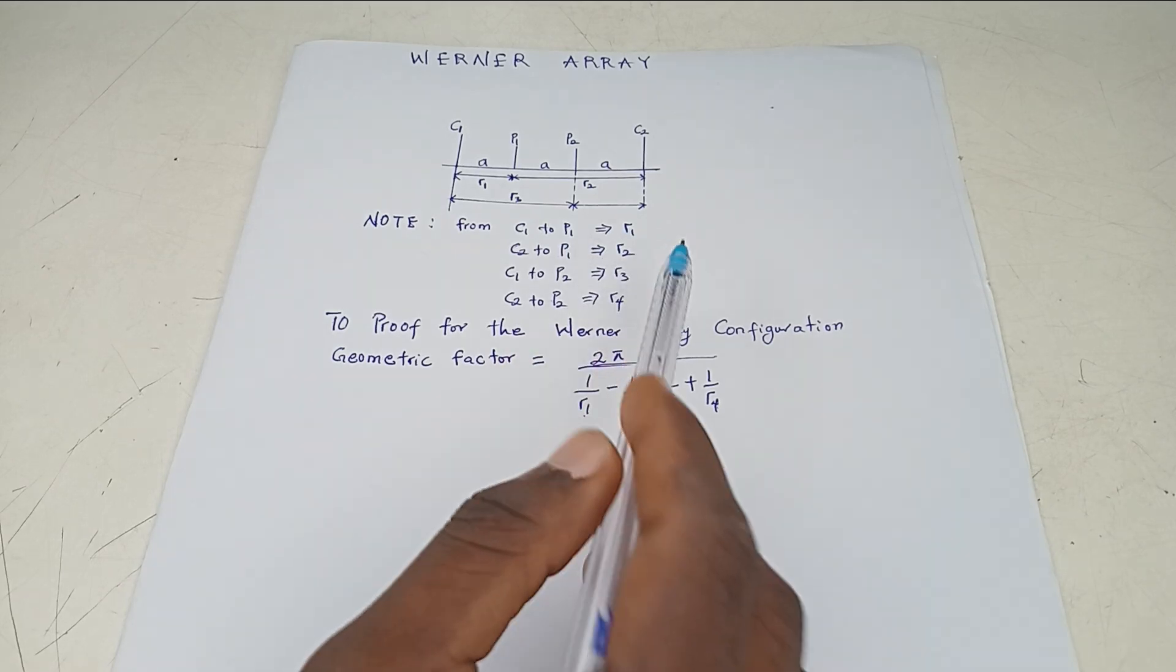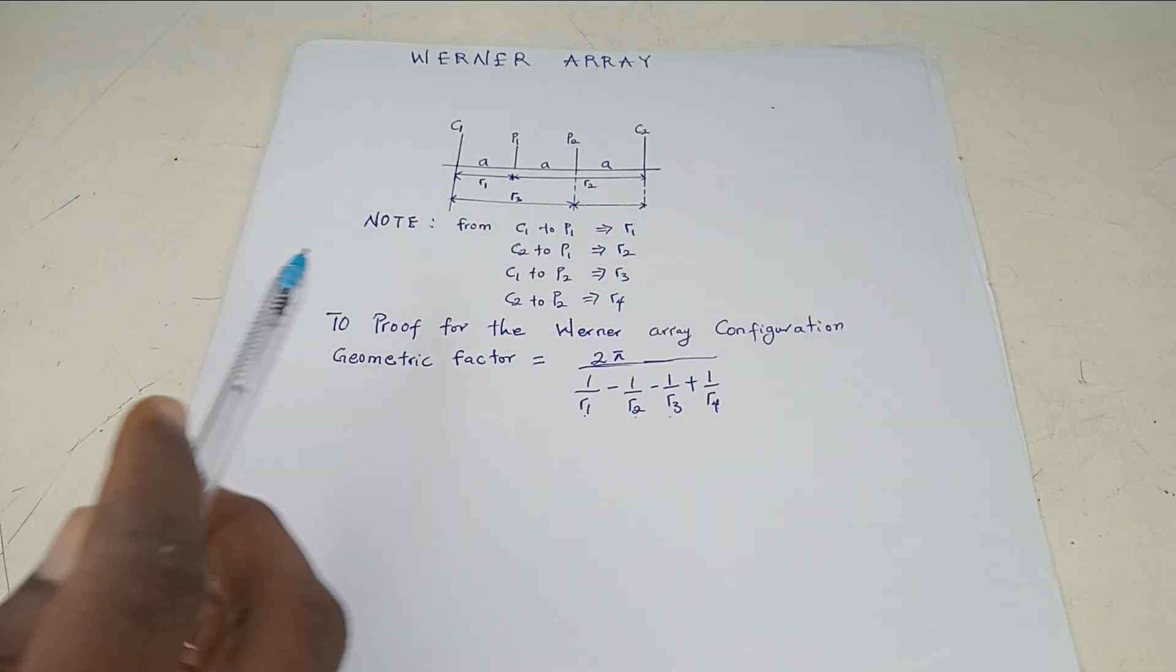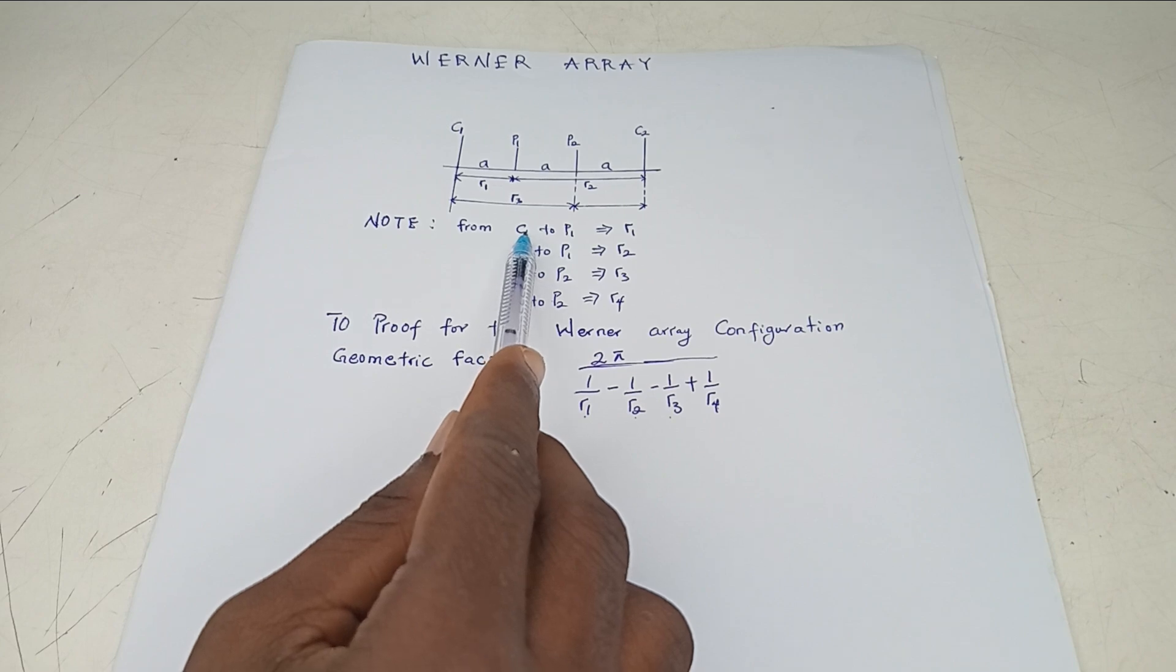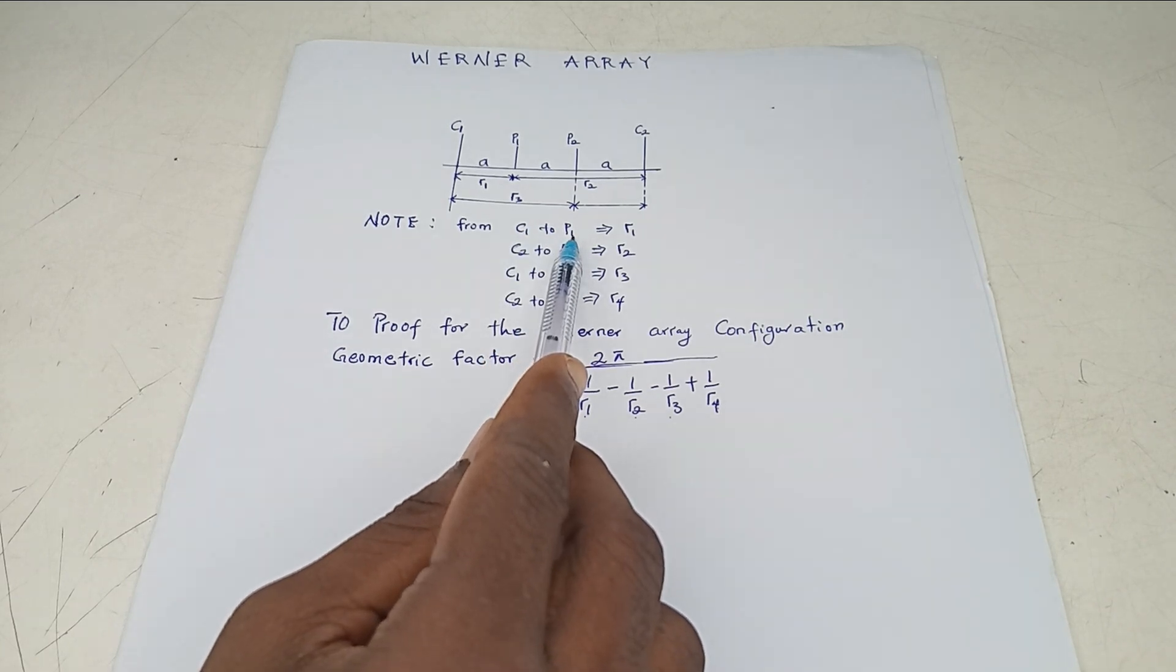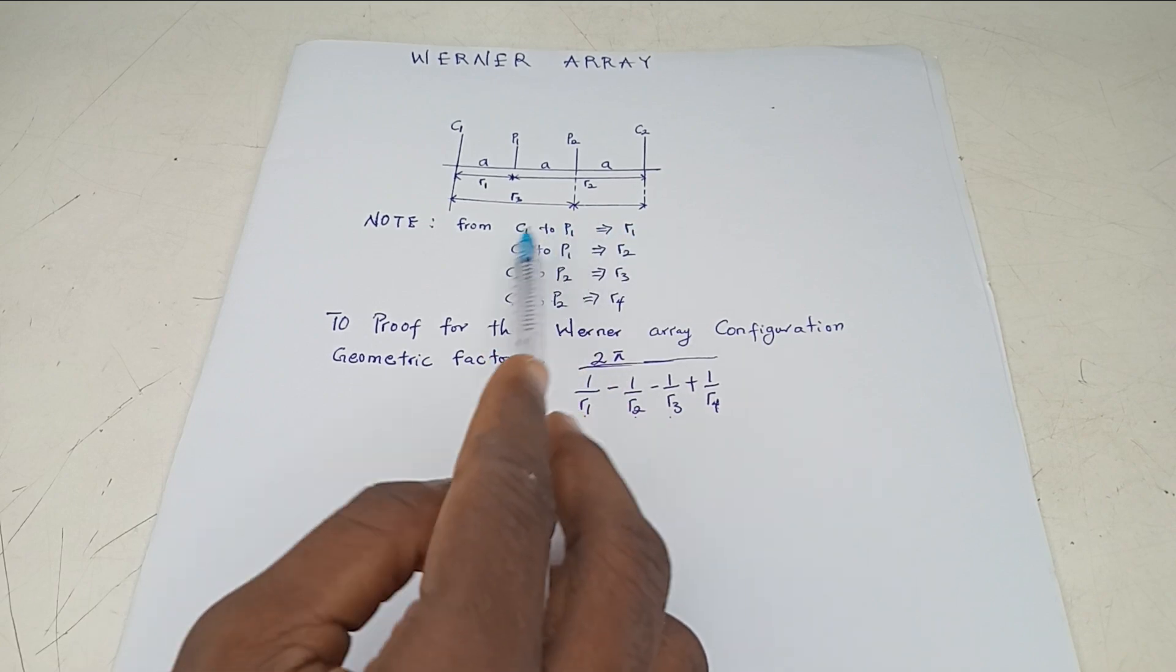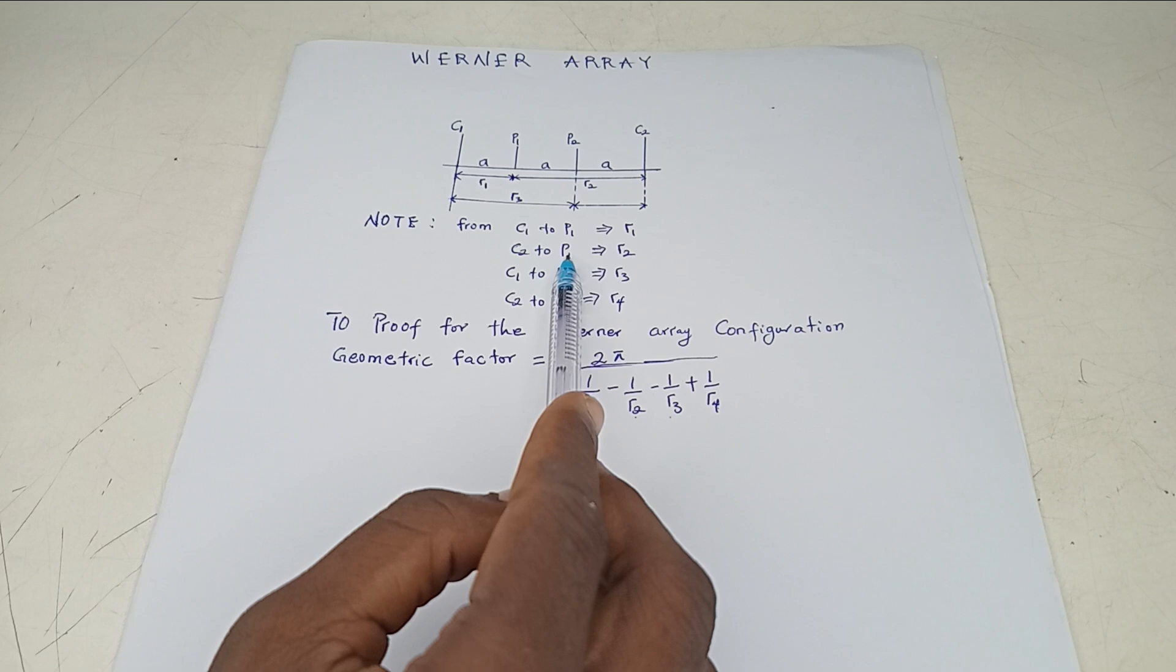So what is R1? Always remember, R1 is the distance from C1, from the current to the first potential. Just note that R1 is C1 to P1. R2 is C2 to P1.